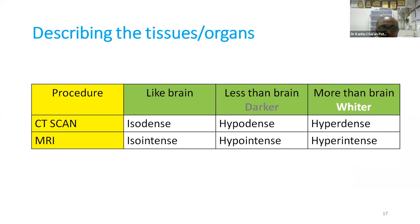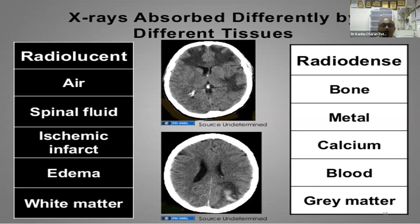In CT scan, brain is isodense; less than brain density is hypodense; more than brain is hyperdense. In MRI, terminology is iso-intense, hypo-intense, and hyper-intense. Radiolucent structures like air, spinal fluid, ischemic infarct, edema, and white matter look darker. Radiodense structures like bone, metal, calcium, blood, and gray matter look brighter on CT scan.